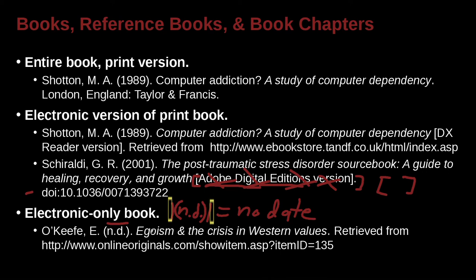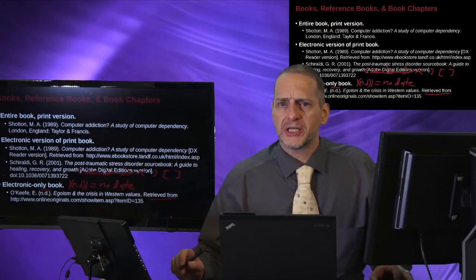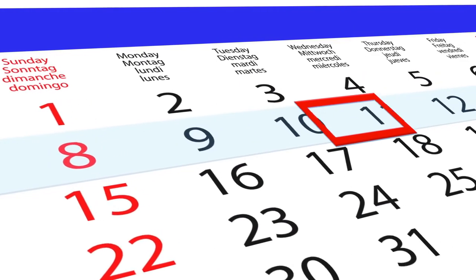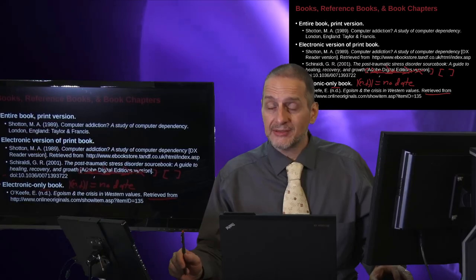There is no date for this. If you don't have a date, this is one way to do it. And then here is the name — 'Egoism and the Crisis of Western Values.' And here we have 'Retrieved From' because this is online — that's one reason it doesn't have a date. I found it very annoying that a lot of information online actually does not have a publication date. Do try your best to find a date if you can, and if you can't, well then you can use n.d.